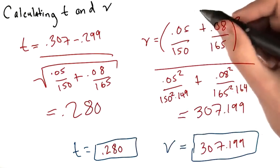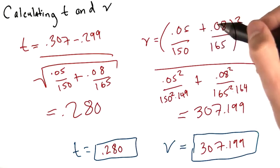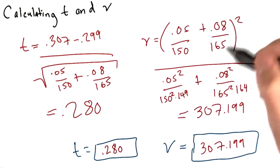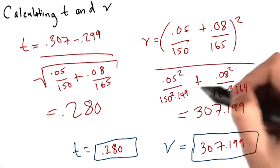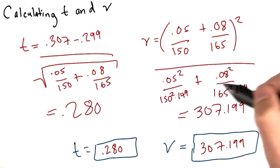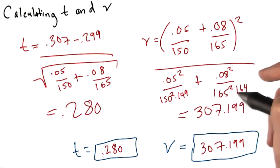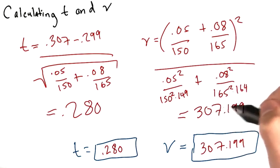Meanwhile, nu is going to be the quantity 0.05 over 150 plus 0.08 over 165 squared over 0.05 squared over 150 squared times 149 plus 0.08 squared over 165 squared times 164, which is going to be 307.199.